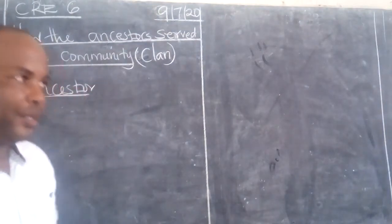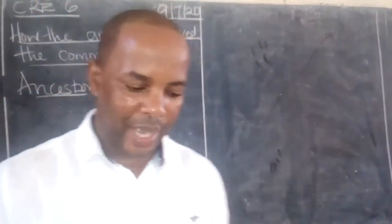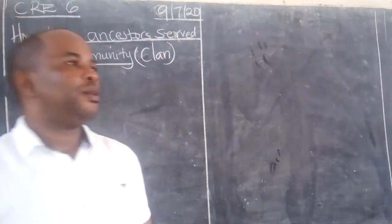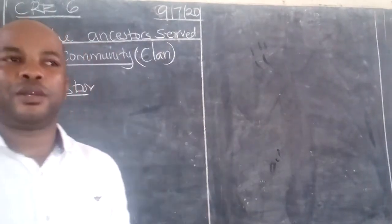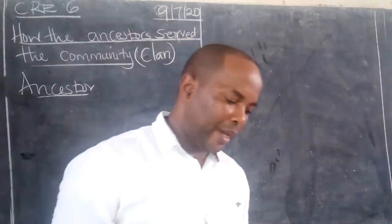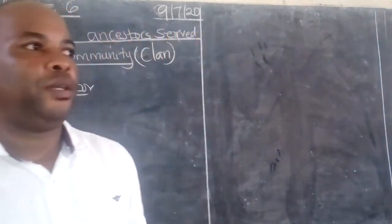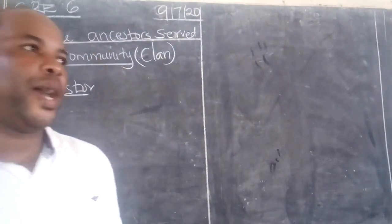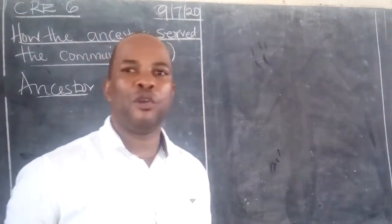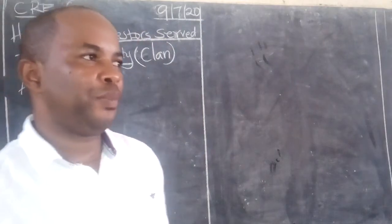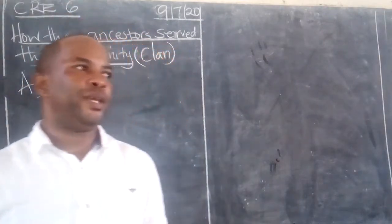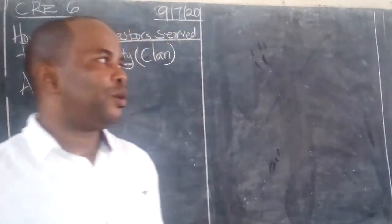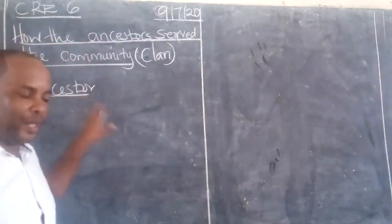What is the meaning of the term ancestor? We said in our previous lessons that an ancestor is a person — or people — who died a long time ago, before our lifetime. That means someone who lived many years ago before we were born. That person we call him or her an ancestor.